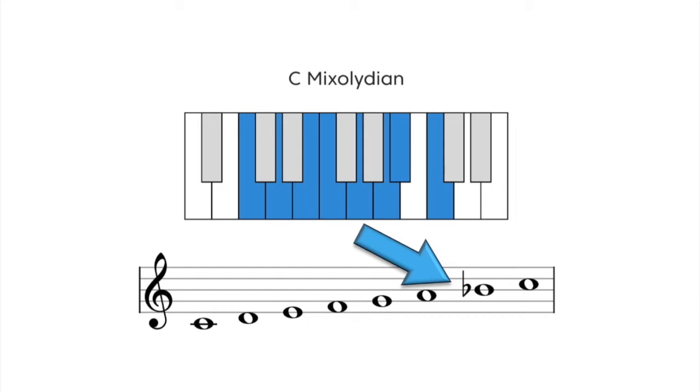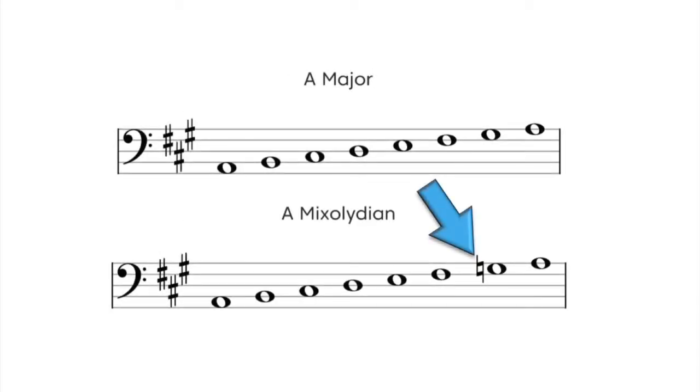You could also think of this as an F major scale, but starting from C. Let's take a look at this A major and A Mixolydian scale. Again, notice that to form a Mixolydian scale, you lower the seventh note by the half step.